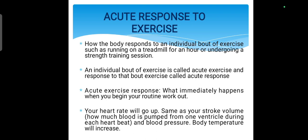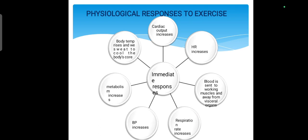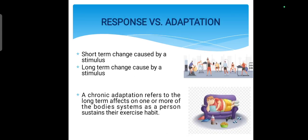Stroke volume is the amount of blood the ventricle pumps per beat. Your blood pressure raises and body temperature raises — all of this is included in the acute response. The immediate responses include heart rate increase, respiratory rate increase, and blood pressure raise. Blood is redirected away from visceral organs toward working muscles — the leg muscles, lower limb muscles, and chest muscles — and body temperature increases. All of this is the acute or immediate response.